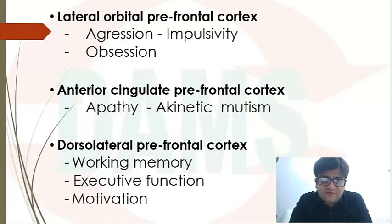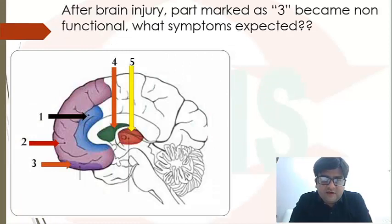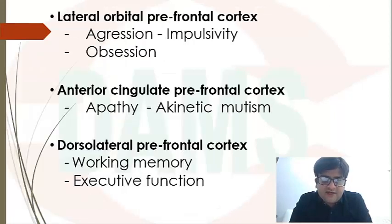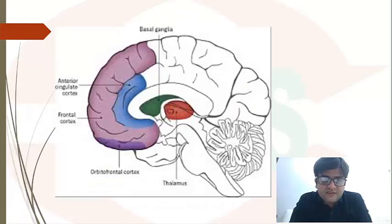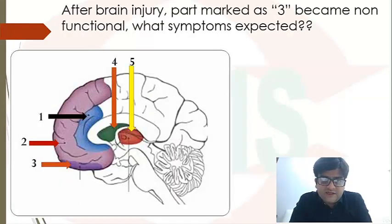Akinetic mutism is a new style of question. Once upon a time in AIIMS they pointed at substantia nigra or subthalamic nucleus. If they point at part four — the green-colored part — that is basal ganglia, and you would expect Parkinson's features. Part five is the thalamus. This was the entire agenda of this MCQ discussion. Thank you.